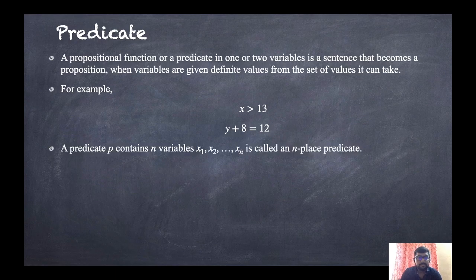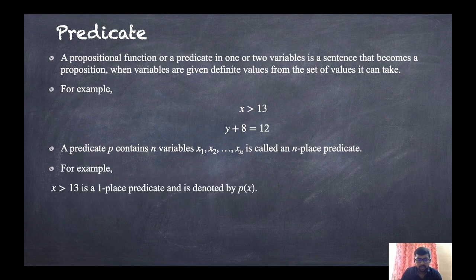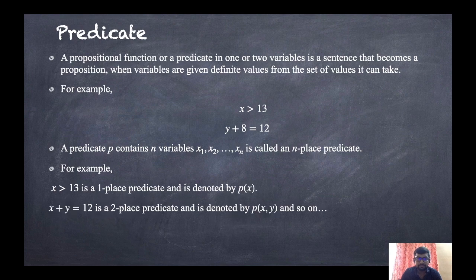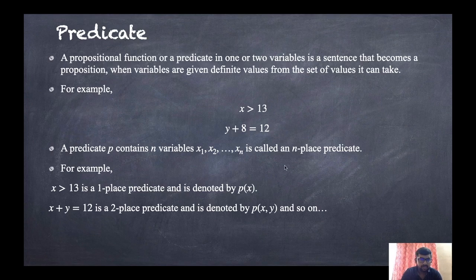A predicate P containing n variables x1, x2, up to xn is called an n-place predicate. For example, 'x is greater than 13' is a one-place predicate because it has only one variable, denoted P(x). 'x plus y equals 12' is a two-place predicate, denoted P(x, y). And 'x plus y plus z is greater than 14' is a three-place predicate, denoted P(x, y, z).